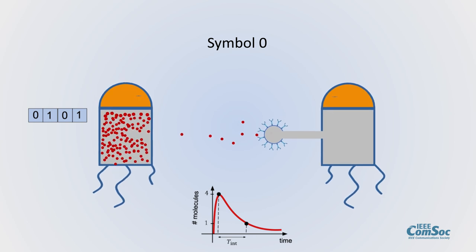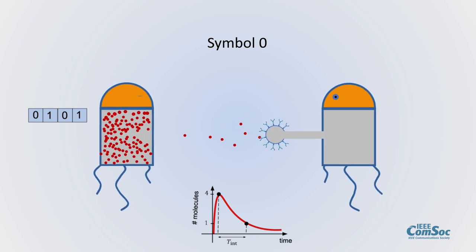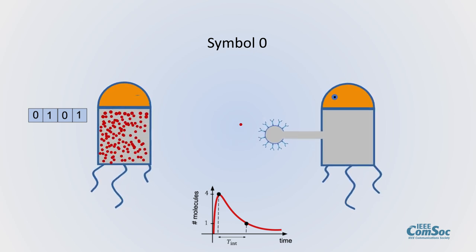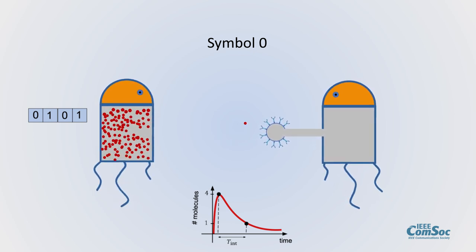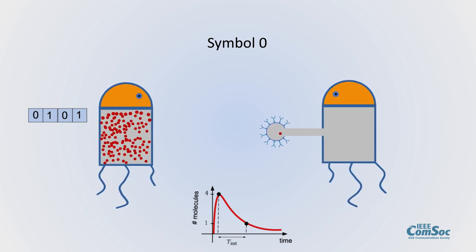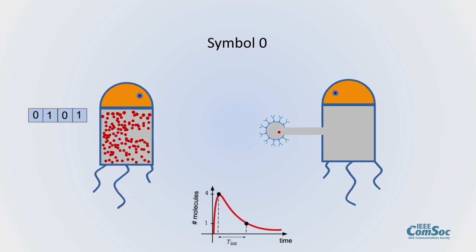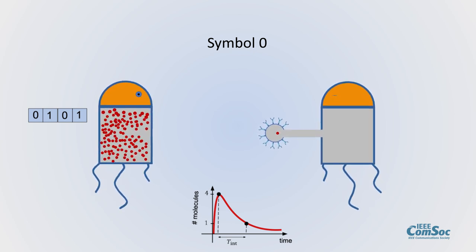To signal the symbol zero, the transmitter keeps the gate closed. But still there are seven molecules diffusing from the long tail of previous signaling. The receiver samples after a time interval. Here one molecule still reaches the receptor even though the gate was closed.